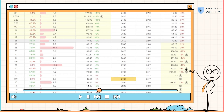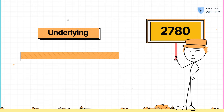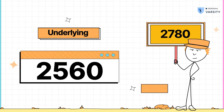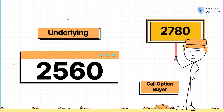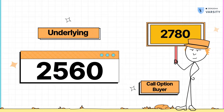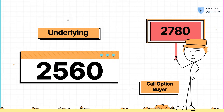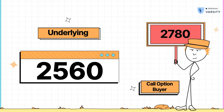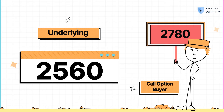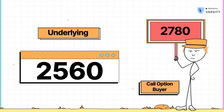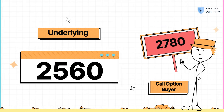Lastly, let's look at a strike price which is much higher than the current market price of Reliance — let me pick 2780 for instance. If the expiry were to happen right now, would you as a call option buyer exercise your right on a 2780 call option? Of course you wouldn't. It simply wouldn't make sense to exercise your right to buy Reliance at 2780 when Reliance is trading at 2560. Therefore, all these options where it doesn't make sense to exercise your right are called out of the money options, or simply the OTM option.